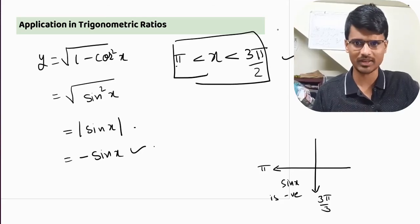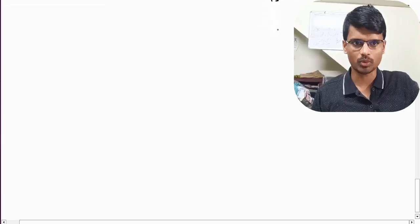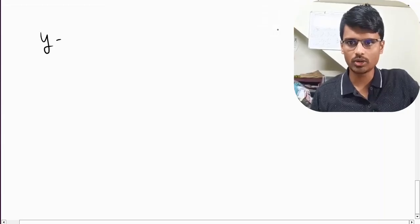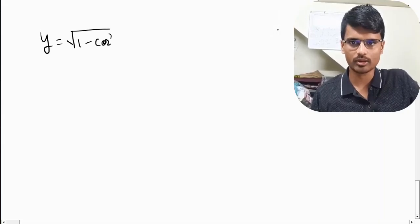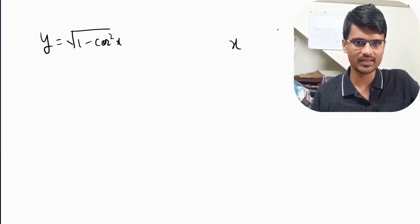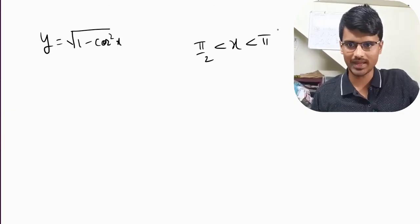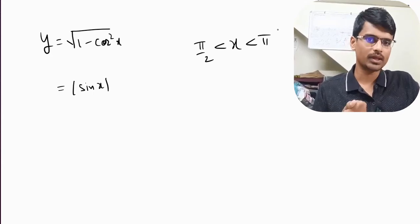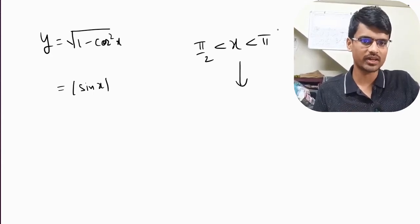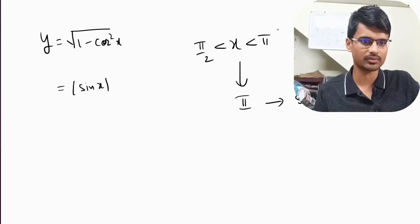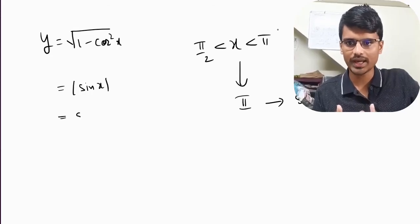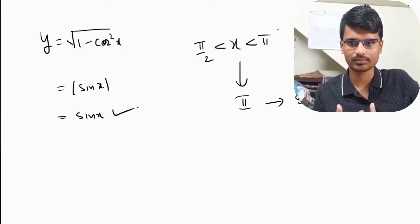Same example. If we had y equal to 1 minus cos square x, but if in the question, they are saying x lies between pi by 2 to pi. In that case, what happens? This is again modulus of sin x. This is which quadrant? This corresponds to second quadrant. In second quadrant, sin is positive. So you can directly write sin x. I hope this concept is clear.